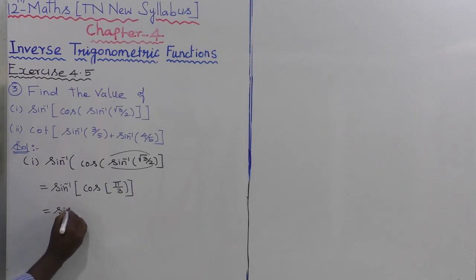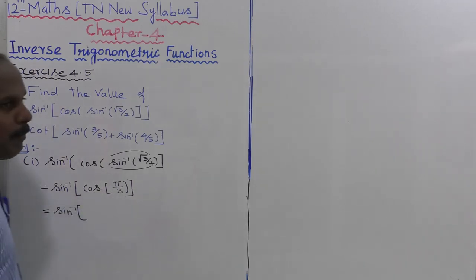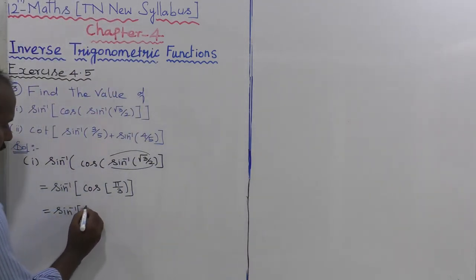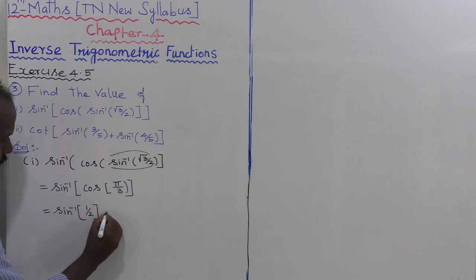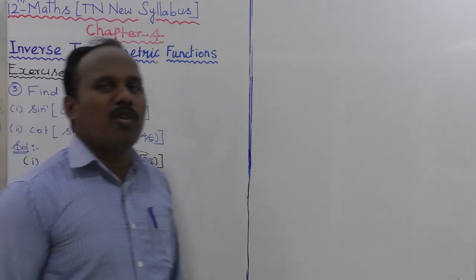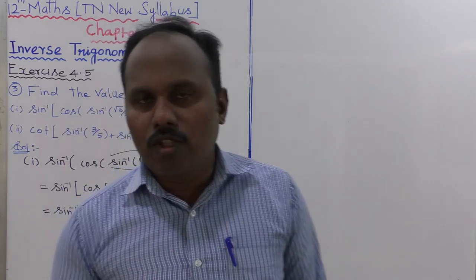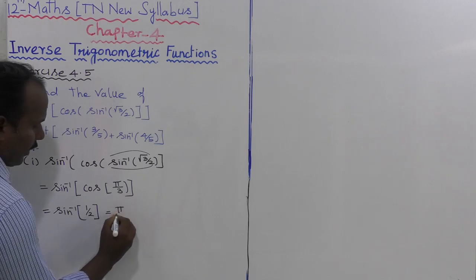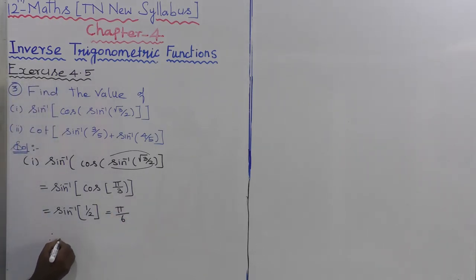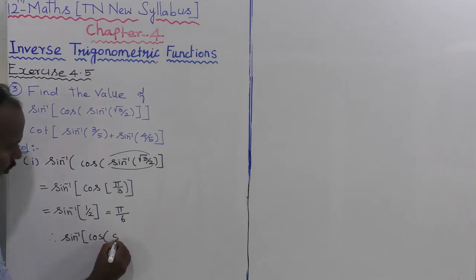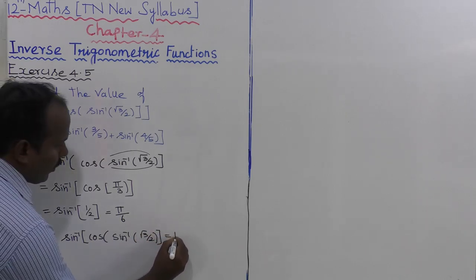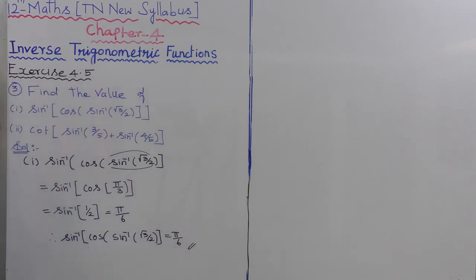So the expression becomes sin inverse of cos(pi by 3), that is cos 60 degrees, which equals 1 by 2. Therefore sin inverse of 1 by 2 equals 30 degrees, equal to pi by 6. So the answer to the first subdivision is pi by 6.